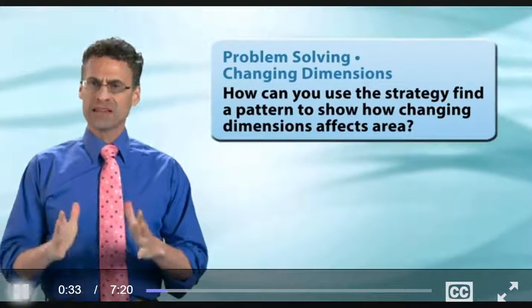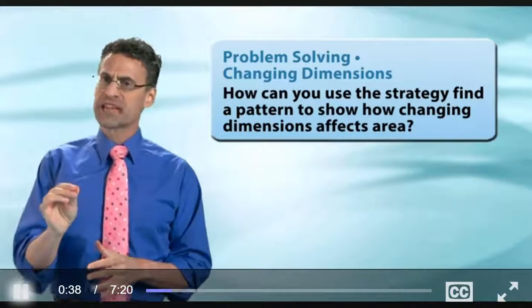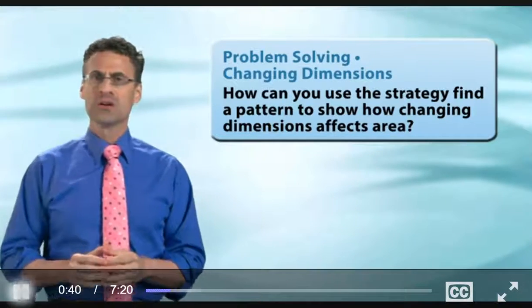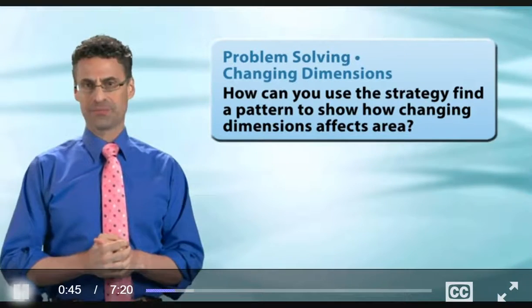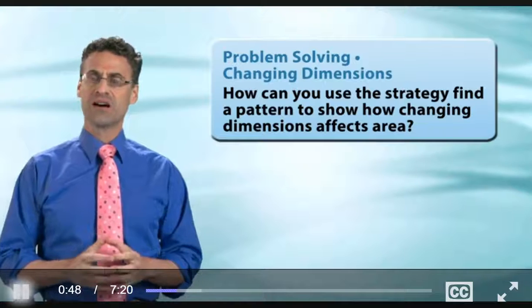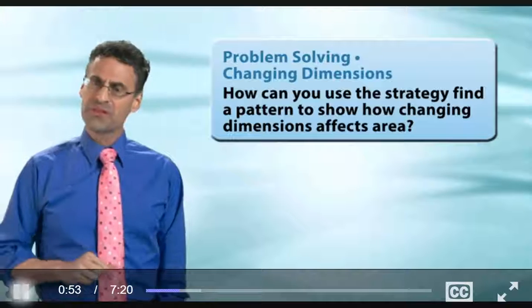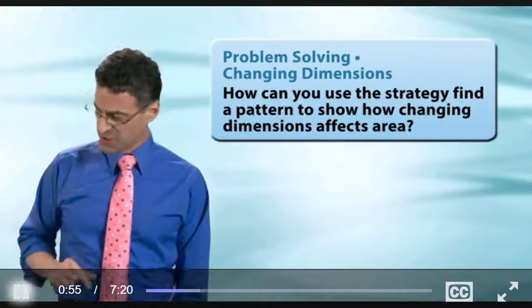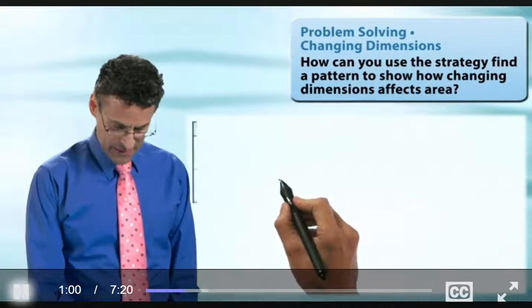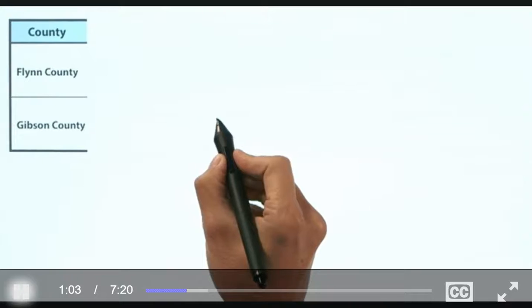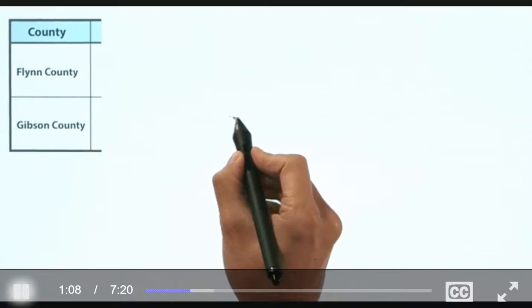So, Flynn County is a rectangle measuring 9 miles by 12 miles. Now, Gibson County is a rectangle with an area six times the area of Flynn County and having a length of 16 miles. Here's the challenge for us. What is the width of Gibson County? Interesting question. Well, first of all, let me just show you these basic things here. I made a little table here. So, first of all, here are the counties that we're looking at. We've got Flynn County and Gibson County. Now, they're both rectangular in shape.